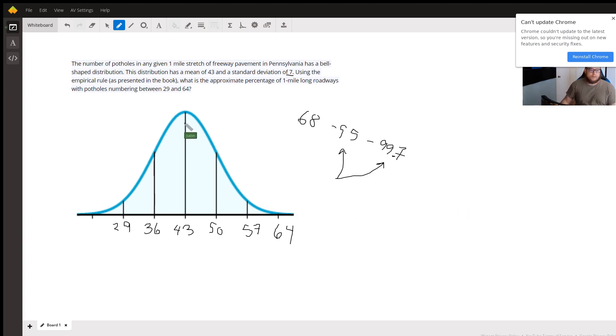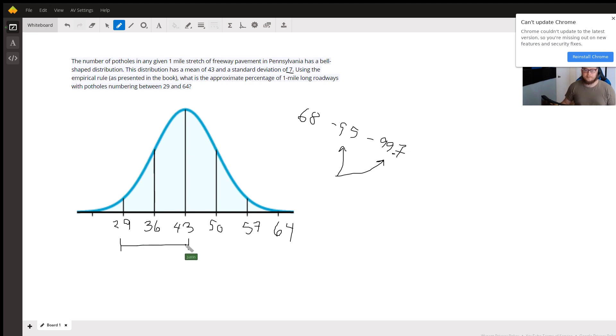So if we were to analyze just the left half, just from 29 to 43, if we went from 29 all the way to 57 that would give us 95%, but if we're just going from 29 to 43, that's half of that. Well, half of 95% is 47.5%.